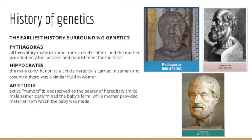Lastly, we look at Aristotle, who lived between about 384 BC and 322 BC. He proposed that active humors — known today as blood — served as the bearer of hereditary traits, and further believed that male semen determined the baby's form, while the mother provided material from which the baby was made. Aristotle further implied that all children should be boys, but concluded that female babies were the result of interference from the mother's blood.